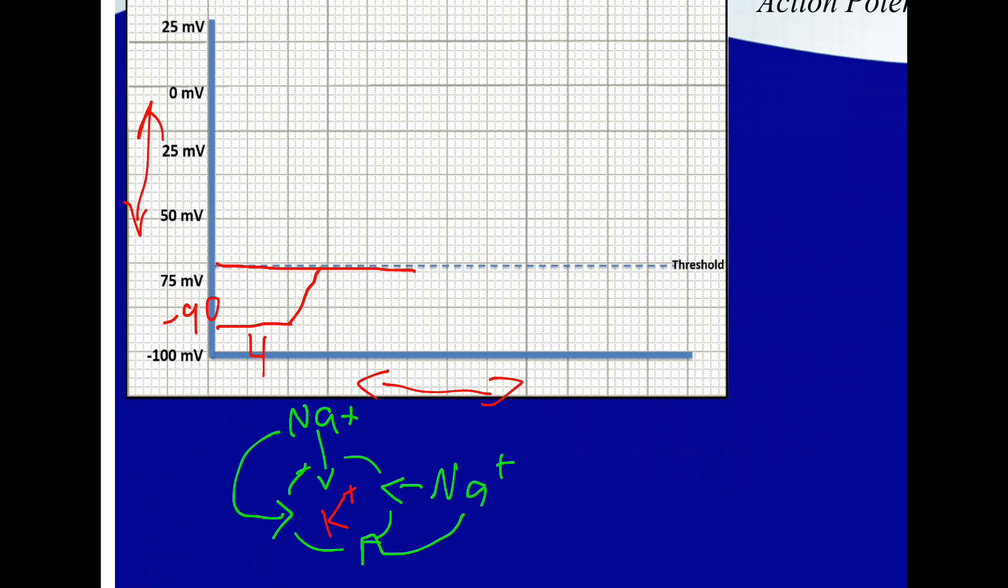Those channels are voltage gated and they open up right when we hit this threshold. Now we're going to get a steep rise, a very steep rise in our action potential. It'll go from negative 70 millivolts all the way up to about 20. So you hit about 20, and that's called phase zero.